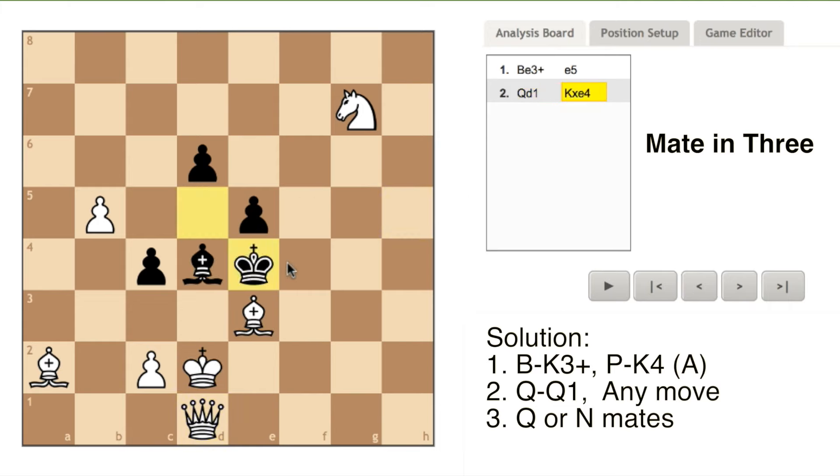If on the second move black takes the knight at king five with its king, white's reply is queen to king rook one and checkmate.